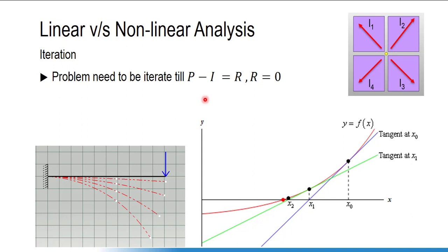To solve any problem, at each node equilibrium should be present — internal forces should equal external forces. Here P is external forces, I is internal forces, and R is the residue. If that residue is not zero for the initial assumptions, we need to make it zero. To achieve zero residue, the software iterates the process using the Newton method or quasi-Newton method.